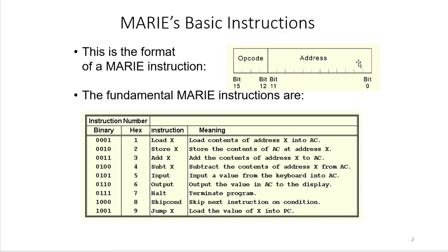Here are the fundamental instructions of MARIE. The MARIE instruction contains 16 bits, with 4 bits for the opcode from bits 12 to 15, and the address from bits 0 to 11. That's the basic format of the MARIE instruction.